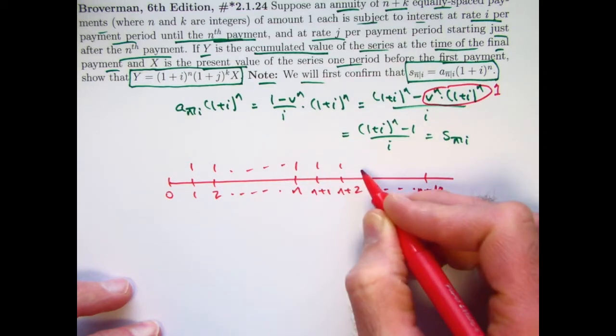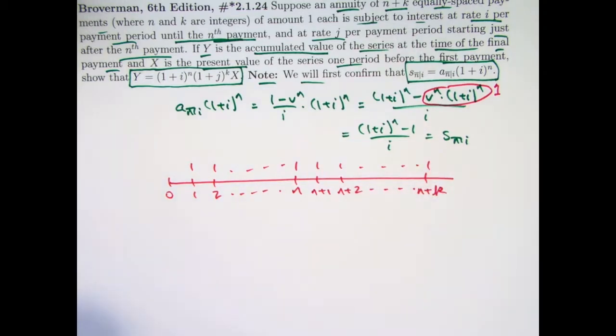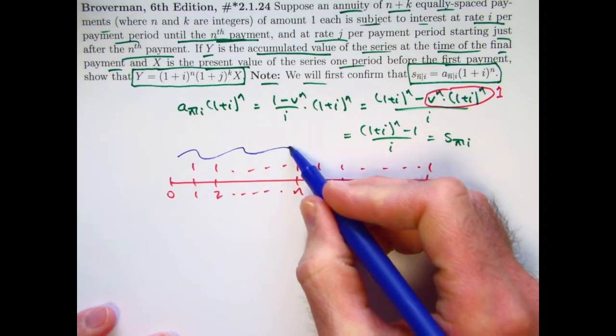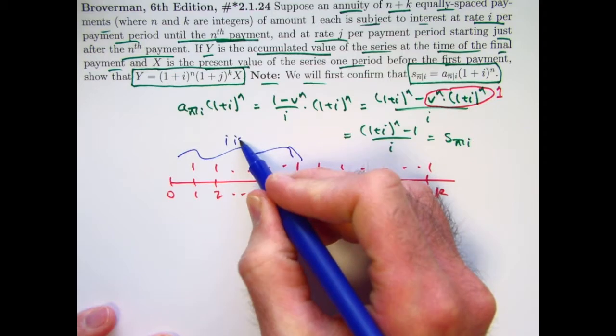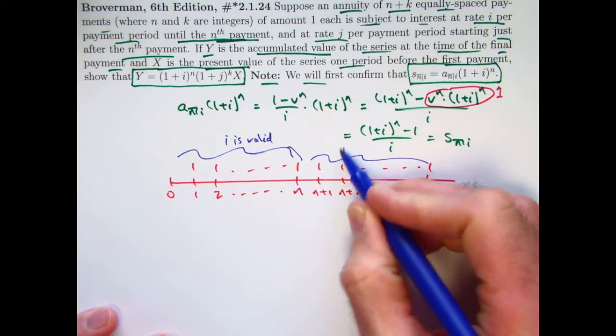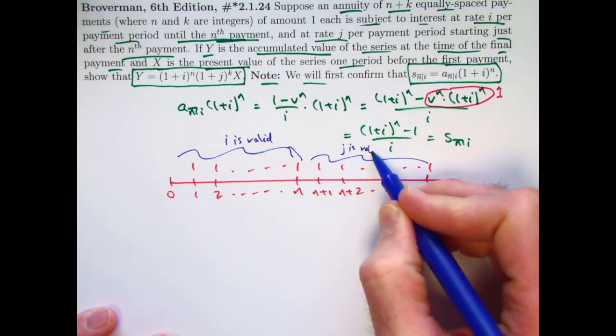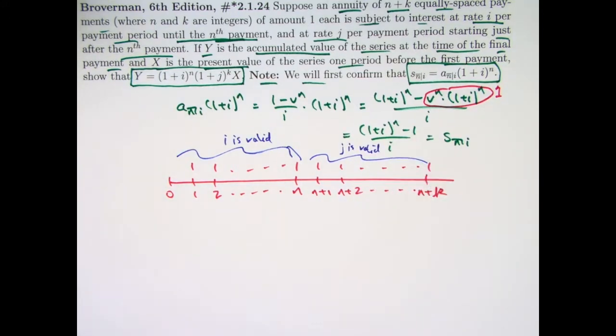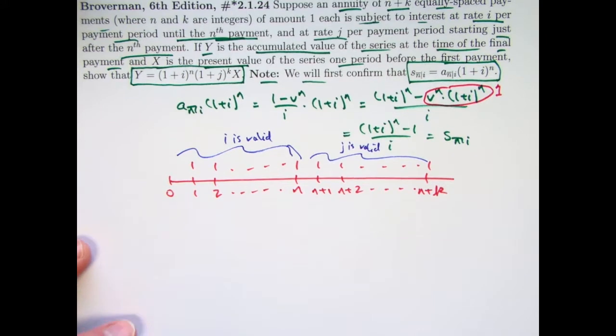On which the interest rate j is valid. So i is valid, that's the going interest rate if you will, and j is valid. Let's write first of all expressions for X and Y in terms of a's and s's and i's and j's and maybe even some v's.